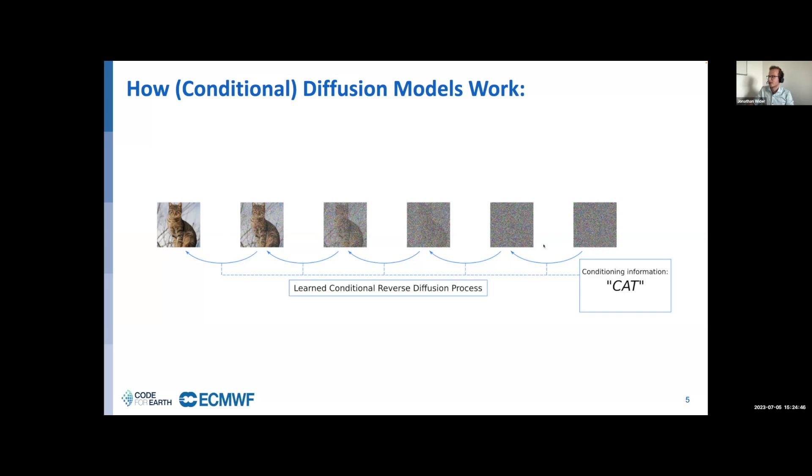After the training is finished, we can use the neural network to build up entire images. What we feed in would be a randomly generated noise vector and the class we want, for example cat, and step by step our neural network would make the noise less noisy and more cat-like.